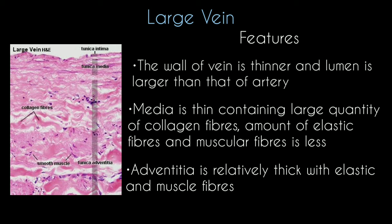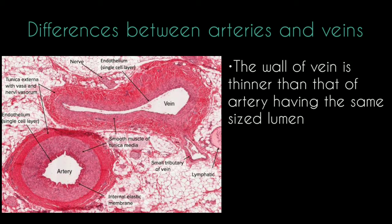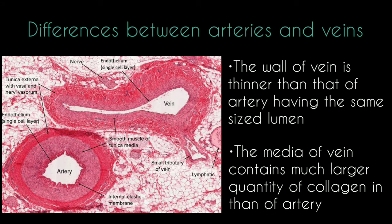The adventitia of veins is relatively thick and contains elastic fibers and muscle fibers. Differences between arteries and veins: the wall of the vein is thinner than that of an artery having the same sized lumen. The media of a vein contains a much larger quantity of collagen than that of an artery.